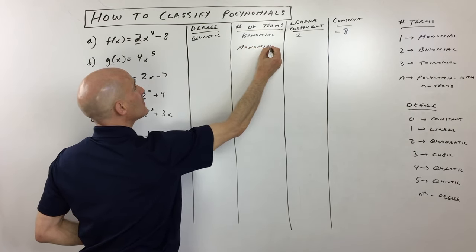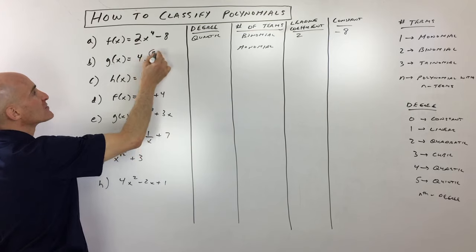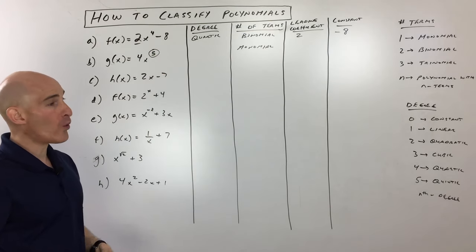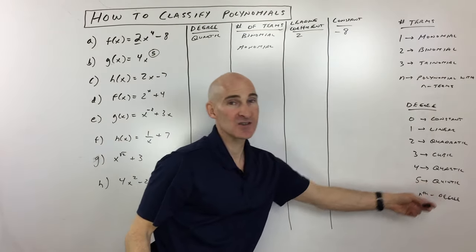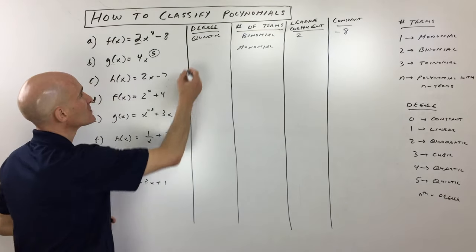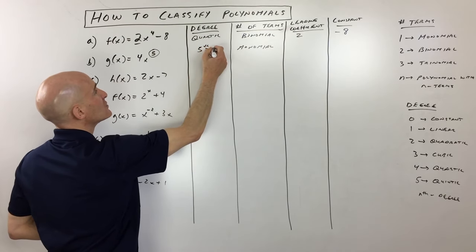And then as far as the degree, you can see the highest power here is five. That's a fifth degree, or you could call it quintic. So either one, fifth degree, quintic, either one's fine. I'll just write fifth degree.